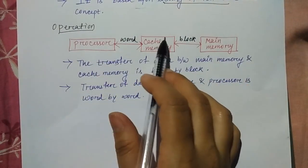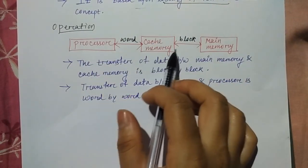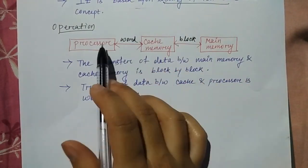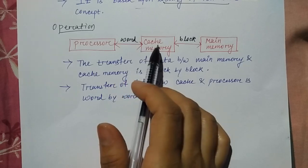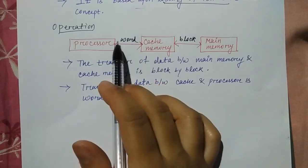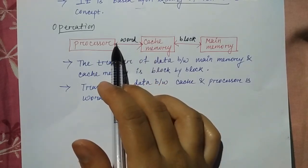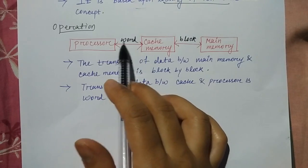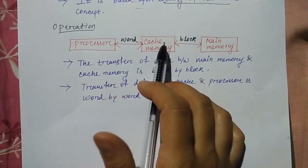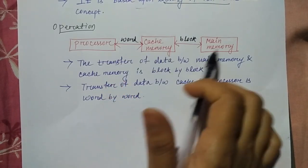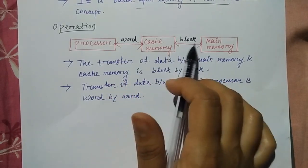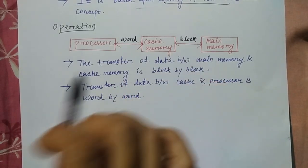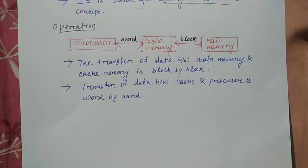The main memory data is stored inside the cache memory. The processor accesses the cache memory. Data is stored word by word in cache, and between cache and main memory, data is transferred block by block.